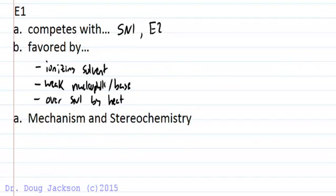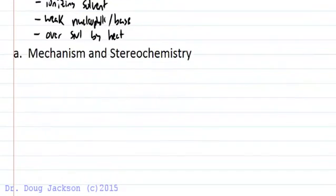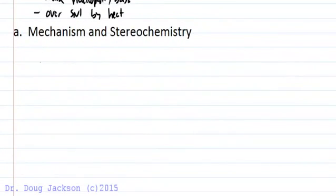Mechanistically, the E1 reaction begins the same way that the SN1 reaction does. If we consider a system where we have beta-hydrogens here and here, we favor the Zaitsev product.